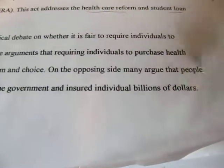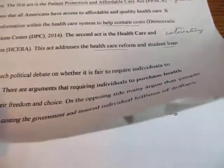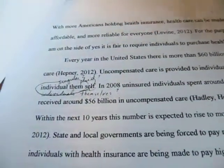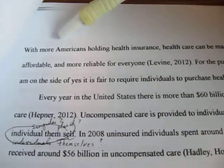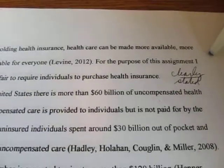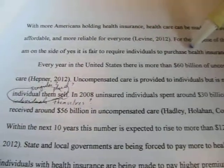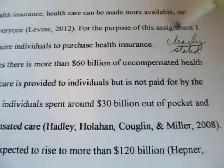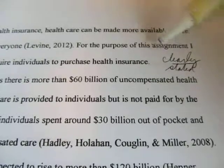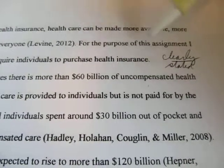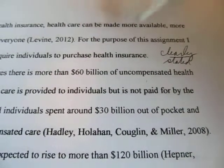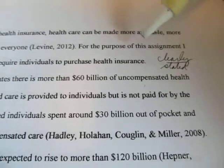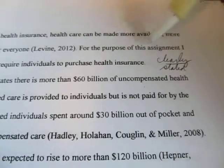This way of stating the two opposing sides is really good — you should do that at the beginning of your paper, particularly if it's a debate issue. Here is the thesis statement, which every instructor is always looking for near the beginning. It says: 'For the purpose of this assignment, I am on the side of yes, it is fair to require individuals to purchase health insurance.' The phrase 'for the purpose of this assignment' is very important — the student is signaling this is an exercise, not a political statement or moral posturing, which is very helpful.